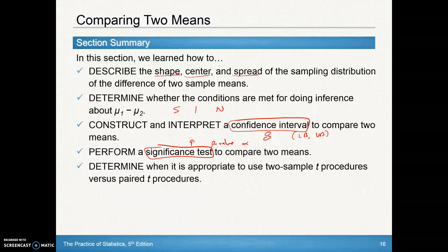Lastly, you should be able to determine when it's appropriate to use two-sample t procedures versus the paired t procedures. If you have paired data, you want to make sure you're doing a paired t procedure—the stuff that we did back in chapter nine rather than doing two-sample procedures.